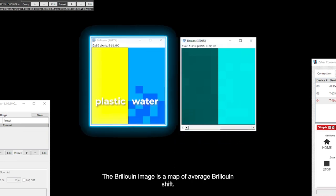The Brillouin image is a map of average Brillouin shift. Again, we see the shift is higher inside the plastic and lower in water.